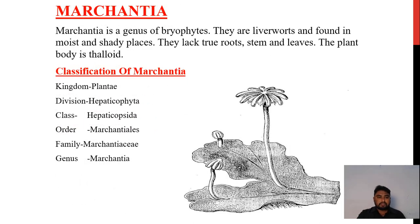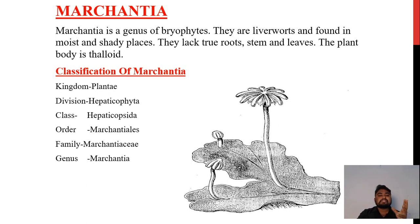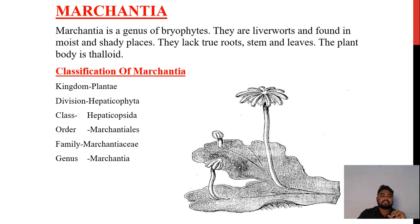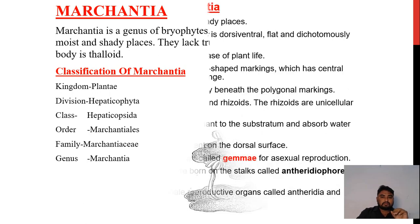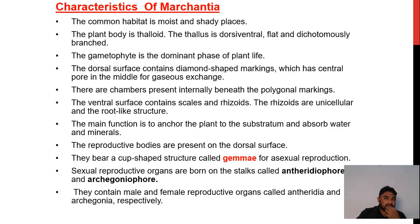Next is Marchantia. Marchantia is a genus of bryophytes. They are liverworts found in moist and shady places. They lack true roots, stem and leaves. The plant body is thallose. The classification of Marchantia: Kingdom - Plantae, Division - Hepaticophyta, Class - Hepaticopsida, Order - Marchantiales, Family - Marchantiaceae, Genus - Marchantia.